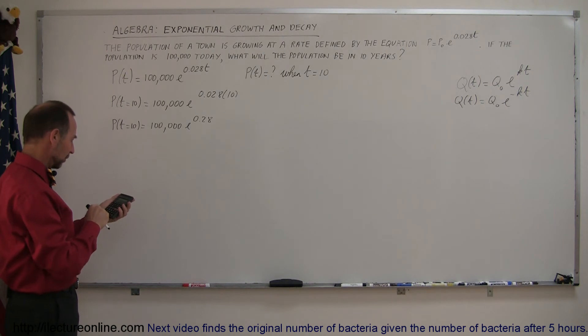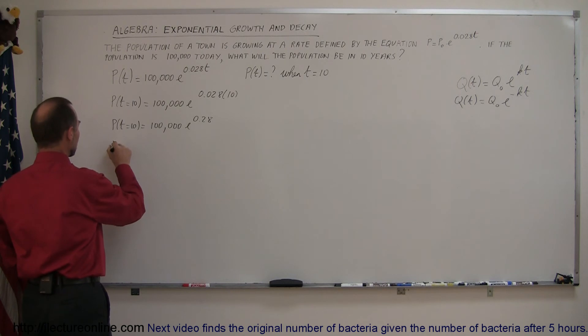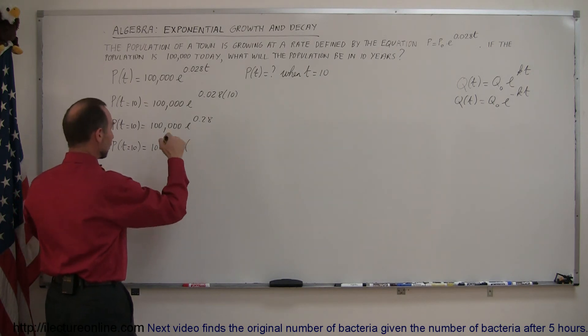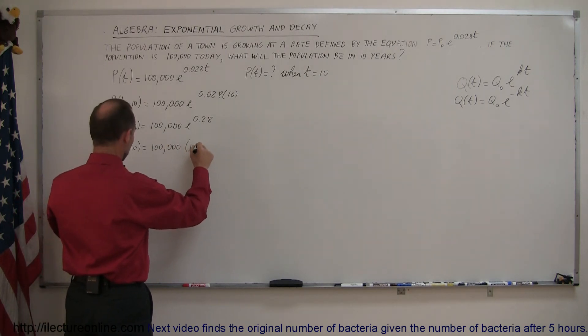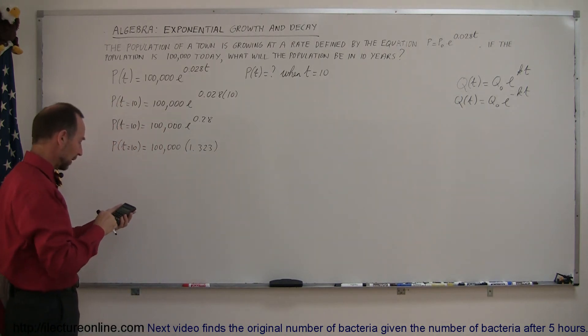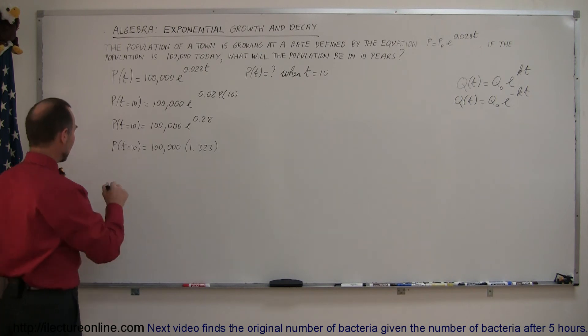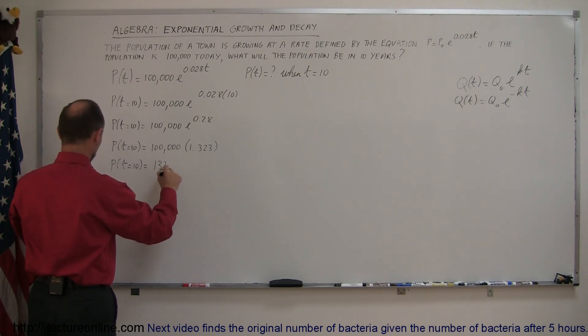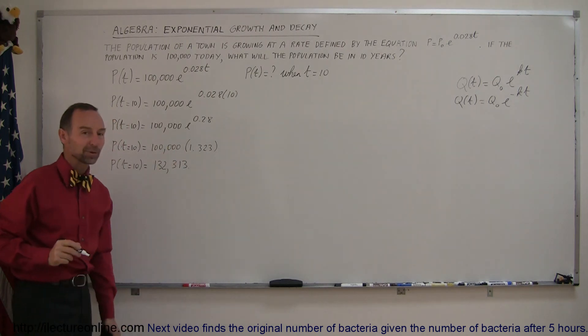So we plug in 0.28. We hit the e to the x button. Let me write the intermediate solution down: 100,000 times e to the 0.28 is 1.323, round it off to three decimal places, and then we multiply times 100,000. And we get the population in 10 years will be equal to 132,313, to the nearest one person.